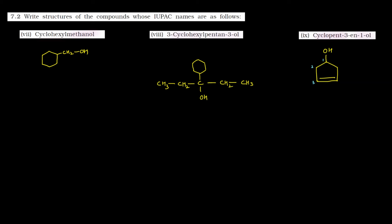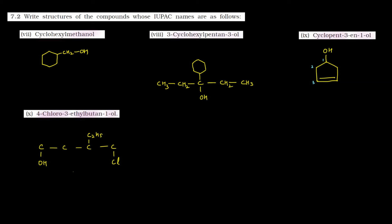Ab hum dekhte hain is question ka last part: 4-chloro-3-ethyl butane-1-ol. Butane ka matlab 4 carbon atoms ki chain: 1, 2, 3, and 4. First position par kya hai — OH group — yeh laga diya. Fourth position par hai chloro, toh yahan lagaya Cl. Aur third position par hai ethyl — ethyl ka matlab CH2 CH3 — toh hum likh denge C2H5. Ab bas valencies complete kar denge: CH2, CH2, 1 hydrogen aur 2 hydrogen. Sabki valencies complete ho gayi. Toh yeh tha is question ka last part — second question hum complete kar chuke hain. Yahan par humne kya sikha: compound ke IUPAC name se unke structures banana. Chalo milte hain next question ke saath. Bye bye.